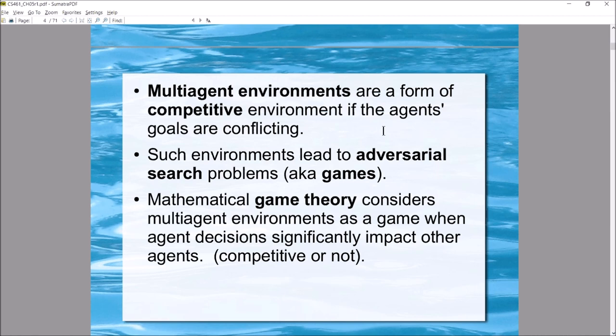Consider tic-tac-toe: the AI will decide to put its X in the center square, but as it builds its search tree it has to consider what the other agent — whose goal is also to win — will do in response. Where is that O going to go? Then where does X go next? And so on, until the game is over. That's a problem where an AI has an adversary and must account for the opponent's possible moves.